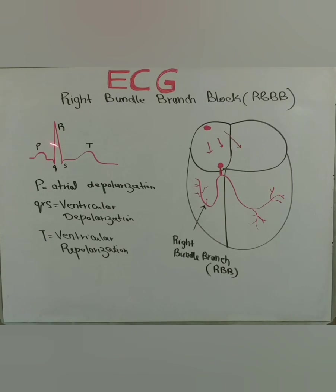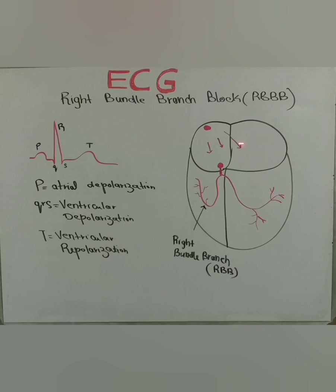This whole conduction system ends up in the formation of the fine morphology of the P, QRS, and T waves. P is the first positive deflection on the ECG paper and it represents atrial depolarization, which happens as a result of impulse entry from the SA node into the atria. From there it goes through the conduction system and the bundle branches into the ventricular muscle, and when they depolarize, there is formation of the QRS complex.